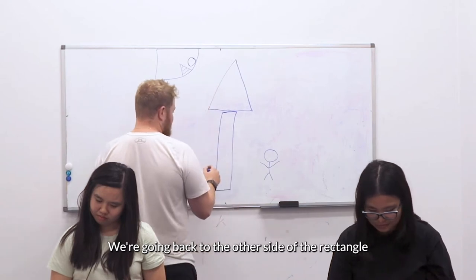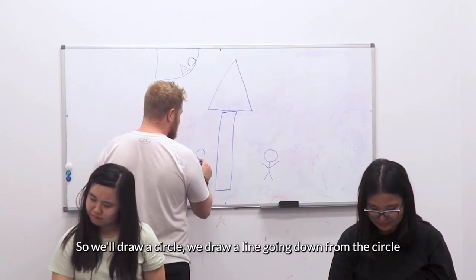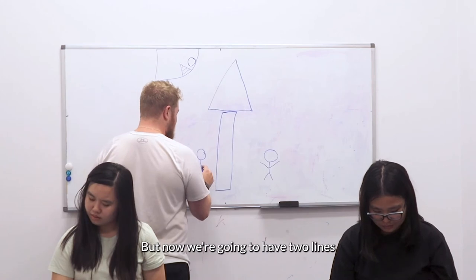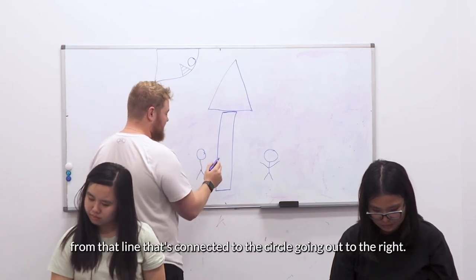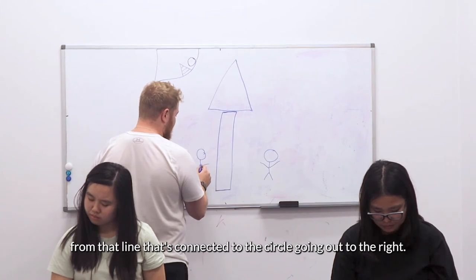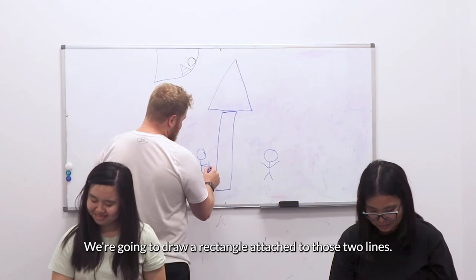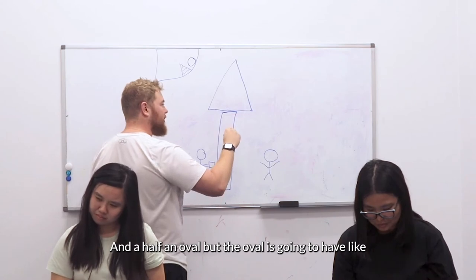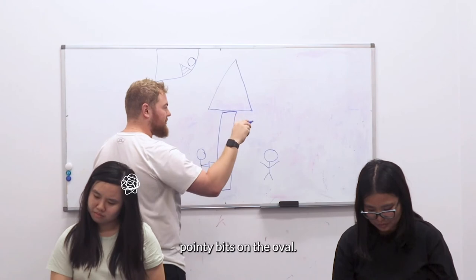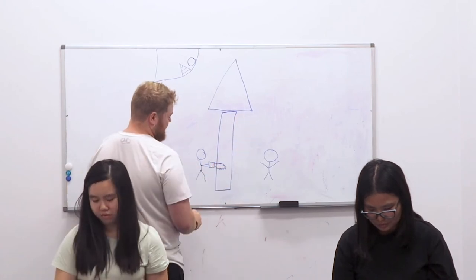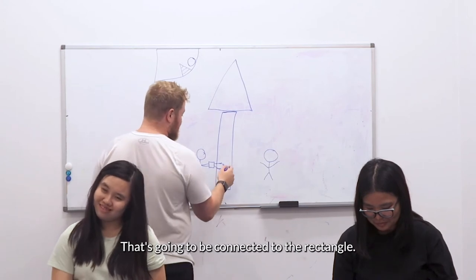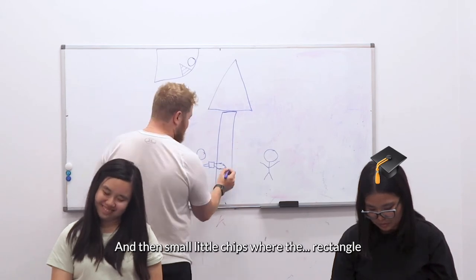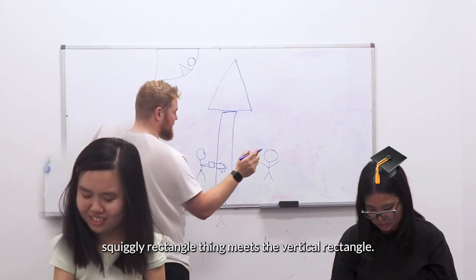We're going back to the other side of the rectangle and draw a similar sort of thing: a circle, a line going down from the circle, and then two lines off that. But now we're going to have two lines from that line connected to the circle going out to the right. We're going to draw a rectangle attached to those two lines, and a half oval. But the oval's going to have like pointy bits on the oval, connected to the vertical rectangle. And then small little chips where the squiggly rectangle thing meets the vertical rectangle.